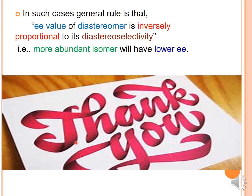In such cases, the general rule is that the enantiomeric excess (EE) value of the diastereomers is inversely proportional to diastereoselectivity — that is, EE is proportional to 1 divided by diastereoselectivity. In other words, the more abundant isomer will have a lower enantiomeric excess. Thank you. If you have any doubts, you can ask in the comment box.